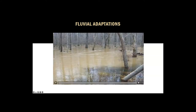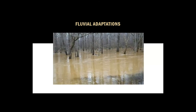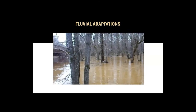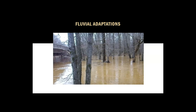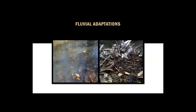Pneumatophores anchor the plant into the ground as well as help with aeration. Then there are fluvial adaptations — adaptations that allow species to survive and thrive in strong currents, as demonstrated here. That's the Wolf River; it's a very small river typically. Fluvial adaptations include sprouting from broken limbs, vegetative reproduction, and water dispersal — also called hydrochory — which is how they get around and find new places to live.